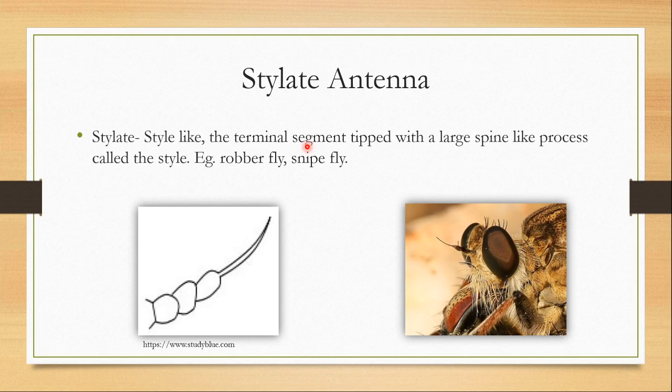The last type of antennae I am going to talk about is the stylate antennae — named because it looks like a stylet. The terminal segment is tipped with a large spine-like process called the stylet. This is found in robber flies and snipe flies.